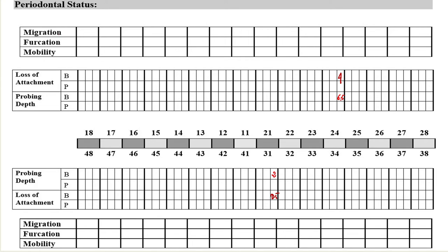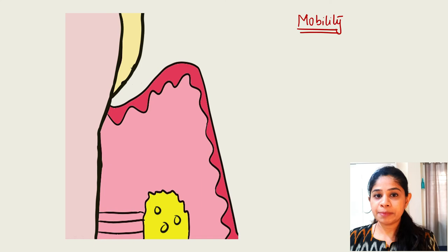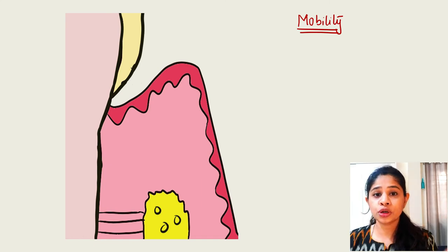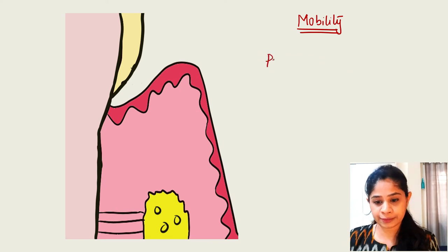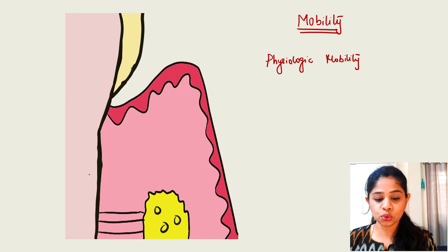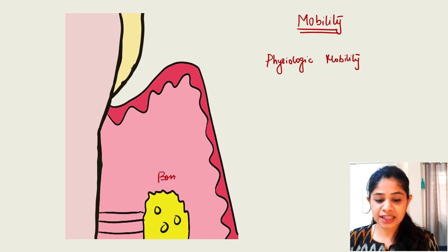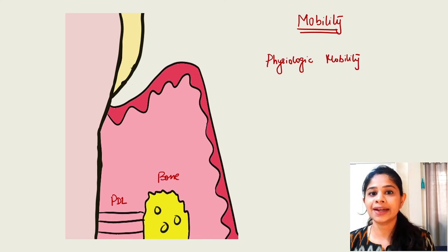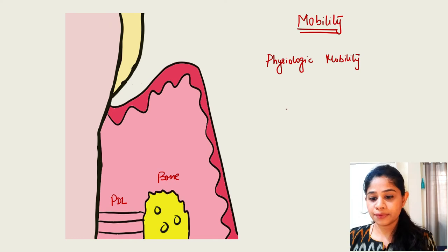Now let's talk about the concept of mobility. Always remember, any tooth — even the healthiest — will be associated with a certain amount of physiologic mobility. This physiologic mobility occurs because the tooth is not directly attached to the bone; it has periodontal ligament fibers interposed between the tooth and the bone, giving it physiologic mobility of somewhere around 0.25 mm.